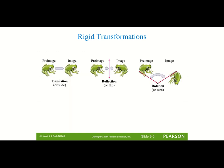Here's just a visual to show you the three rigid transformations. The first one is a slide — the figure just moves either left or right, up or down, so it slides on the plane. A reflection or flip — think of it as a mirror image; the two figures will be mirror images of each other. And then a rotation is a turn, so that figure is going to move a certain angle around the plane.